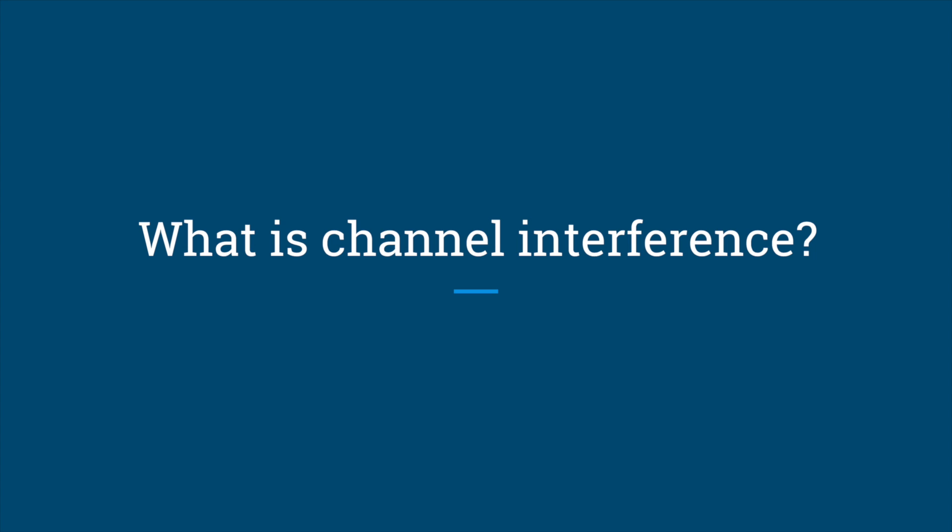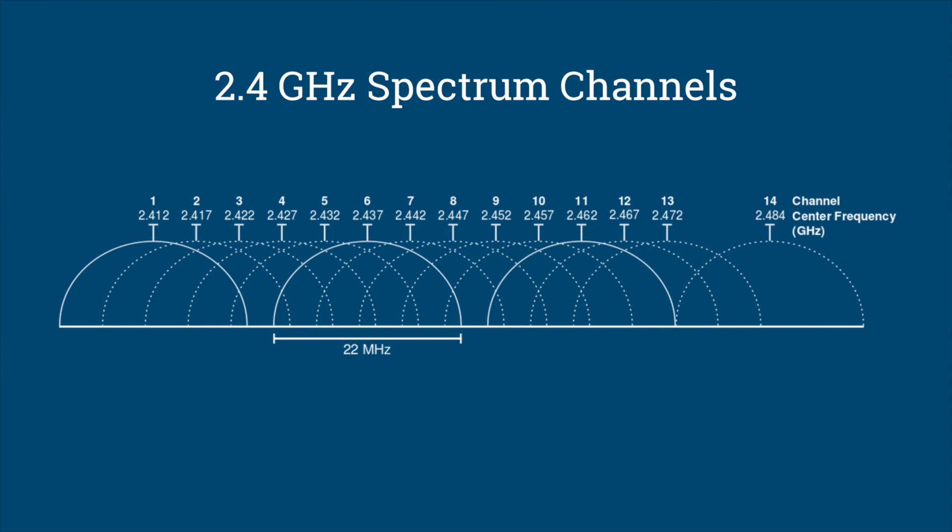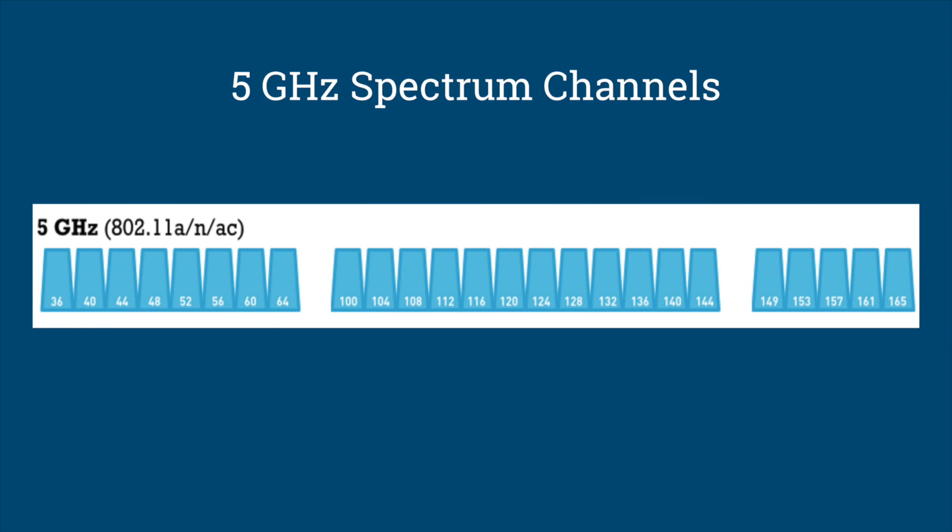What is channel interference? Channel interference occurs when two or more wireless access points are operating with signal overlap on the same or adjacent channels.